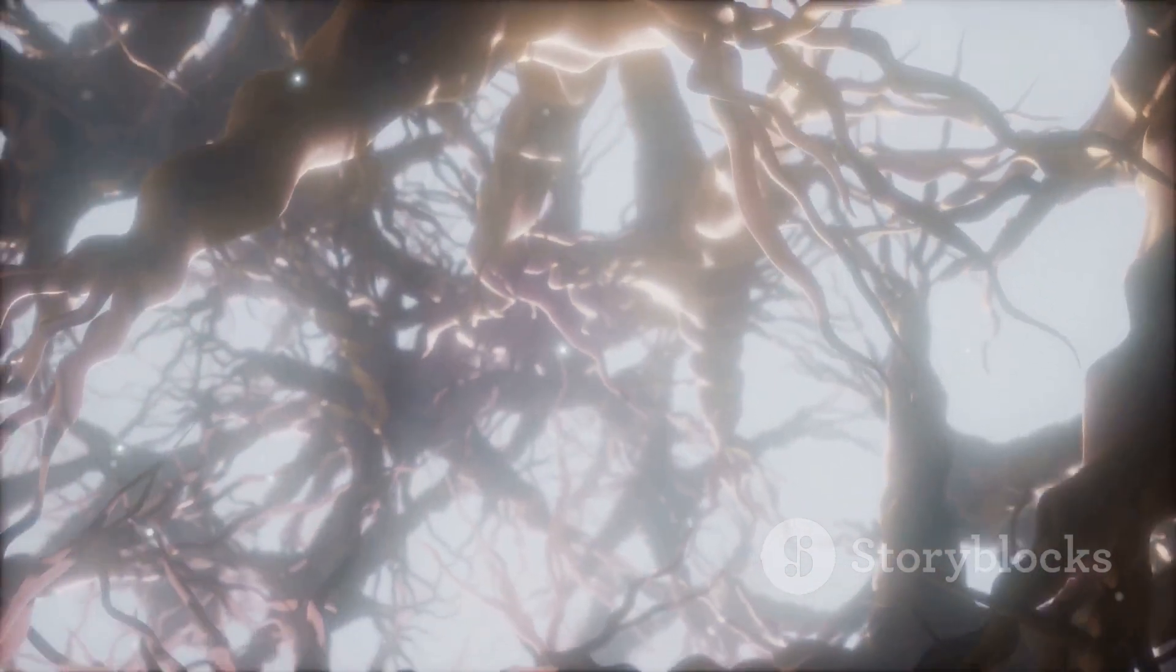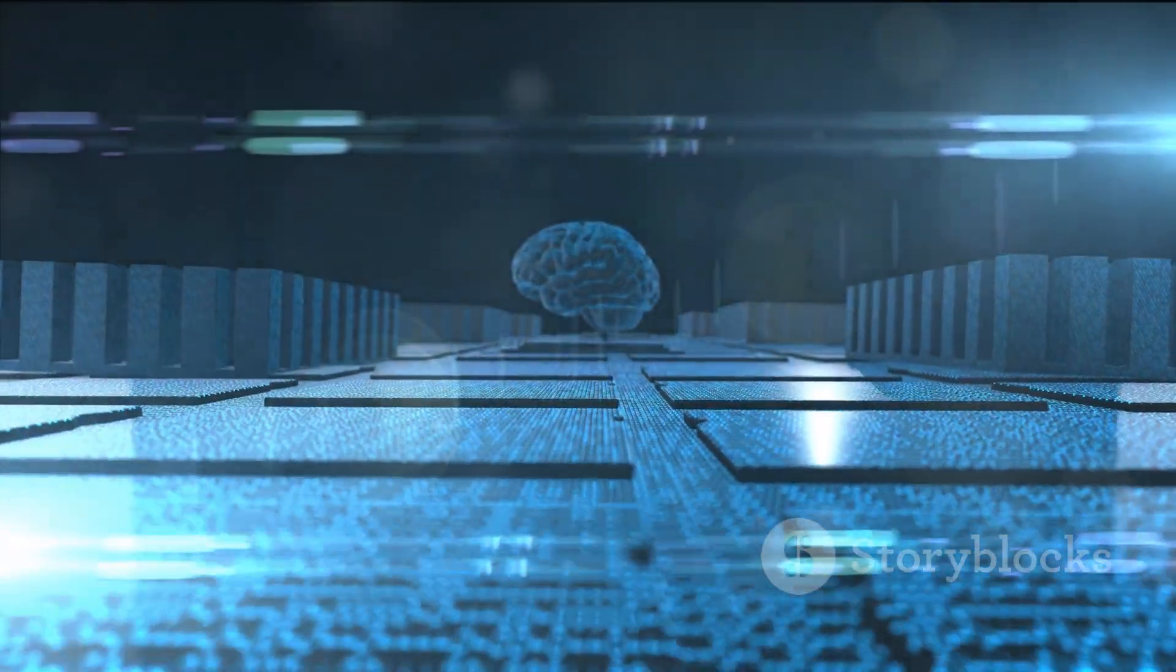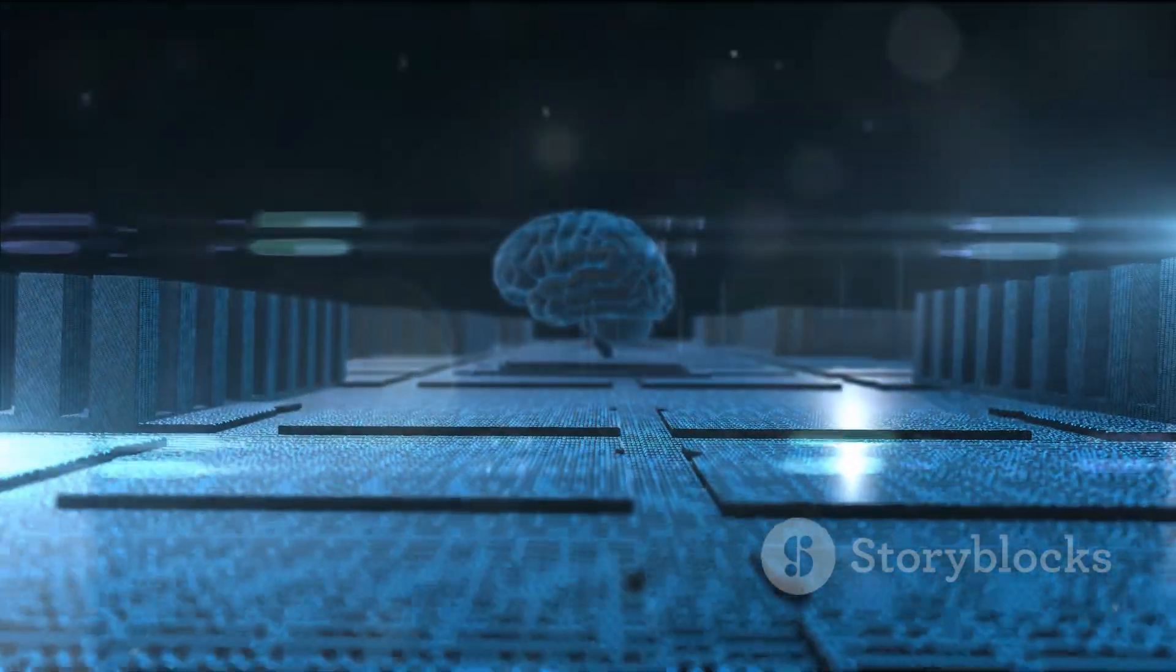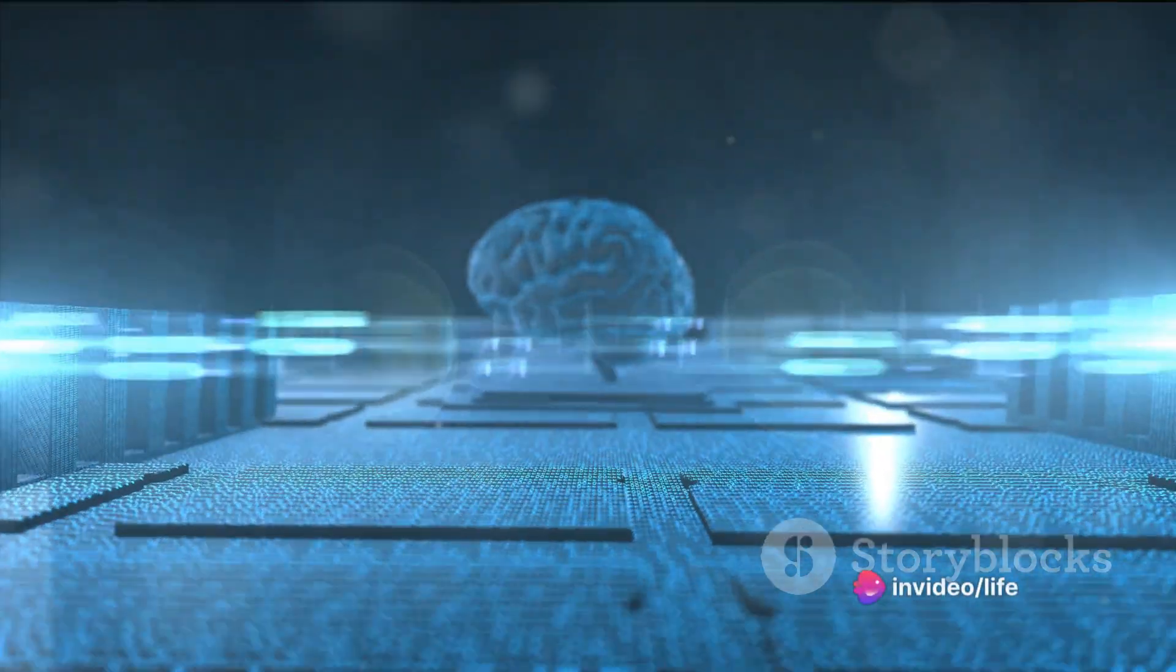These neurons communicate with each other using electrical signals. Just like in a city, the smooth running of the brain depends on efficient communication between its parts.